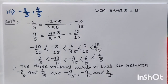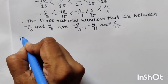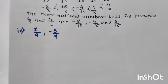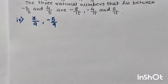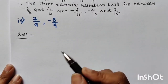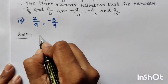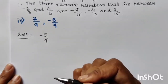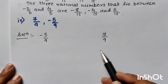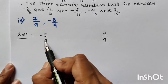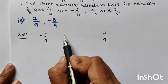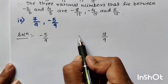Now let us see the fourth question: 7 upon 9 and minus 5 upon 9. As the denominator is the same, we don't have to make the denominator equal. Negative numbers are always smaller than positive numbers, so minus 5 upon 9 is smaller than 7 upon 9. We write minus 5 upon 9 first, then a space, then 7 upon 9. We keep writing the integers between minus 5 and plus 7: minus 4, minus 3, minus 2, minus 1, 0, 1, 2, 3, 4, 5.